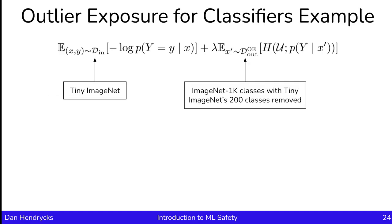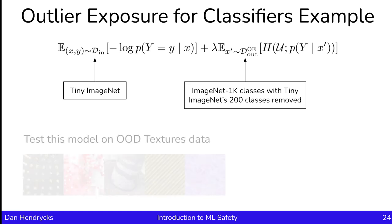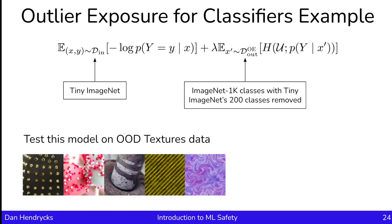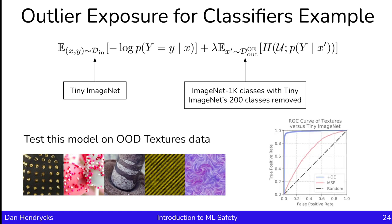In a concrete example, the in-distribution is Tiny ImageNet, which has 200 of ImageNet's classes. One can then make the outlier dataset be the remaining 800 classes. If we train models this way, they end up generalizing to new anomalies. Testing this model on OOD textures data, the performance greatly improves—the maximum softmax probability is the baseline, and after training with outlier exposure, the AROC increases significantly.